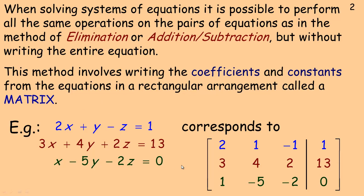We're going to use matrices. A matrix is just a rectangular arrangement of numbers, and the numbers normally have some meaning. For example, the top row — 2, 1, negative 1, 1 — are the coefficients of the linear equation 2x + y - z = 1. We normally write variables x, y, z in order, with the constant on the right side of the equal sign. The vertical line in the matrix represents where the equal sign is in each equation. This is called the augmented matrix for this system of linear equations.